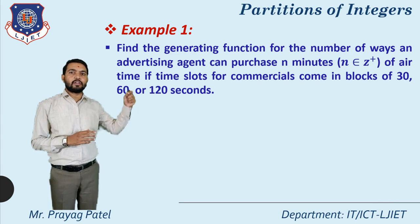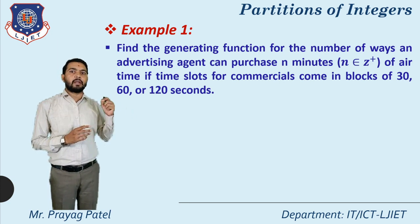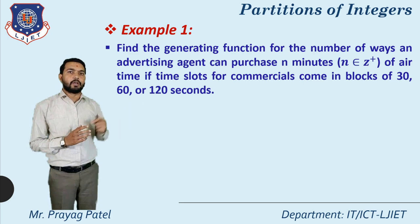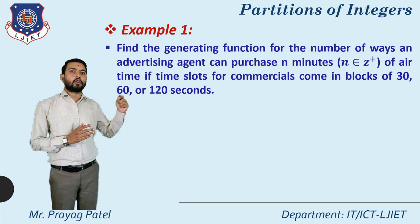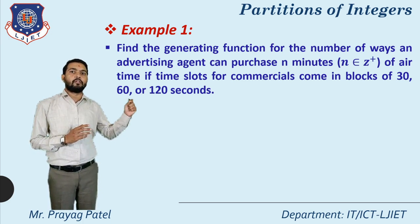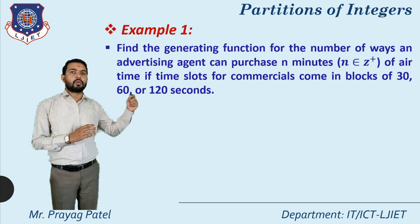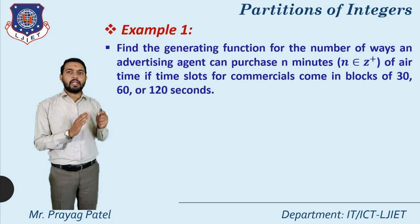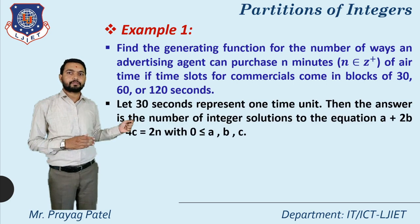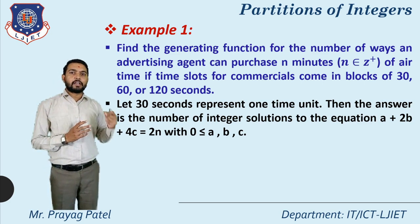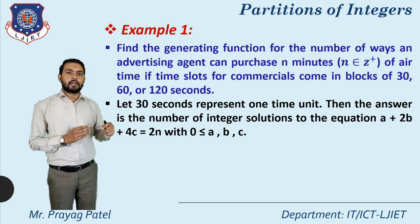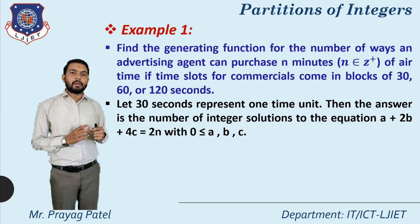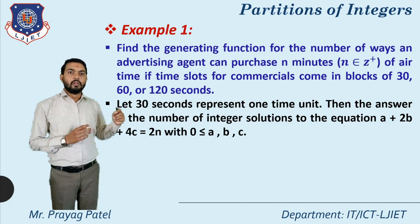Now let's understand partitions using examples. Example 1: find the generating function for the number of ways an advertising agent can purchase n minutes of airtime, where time slots come in blocks of 30, 60, or 120 seconds. Letting 30 seconds represent one time unit, the answer is the number of integer solutions to a plus 2b plus 4c equals 2n, with 0 ≤ a, b, c.